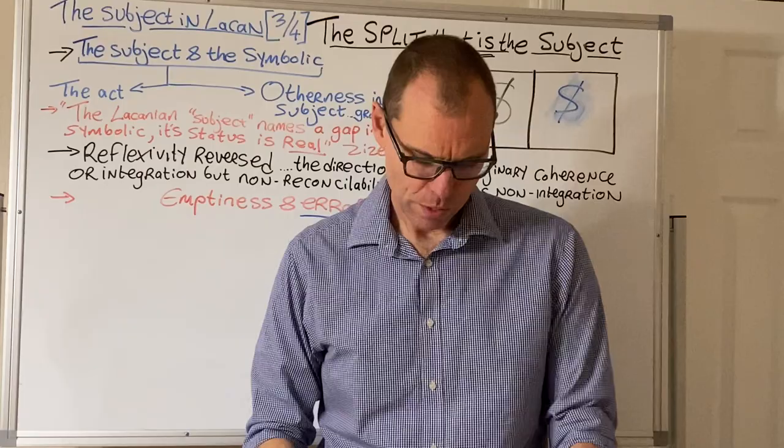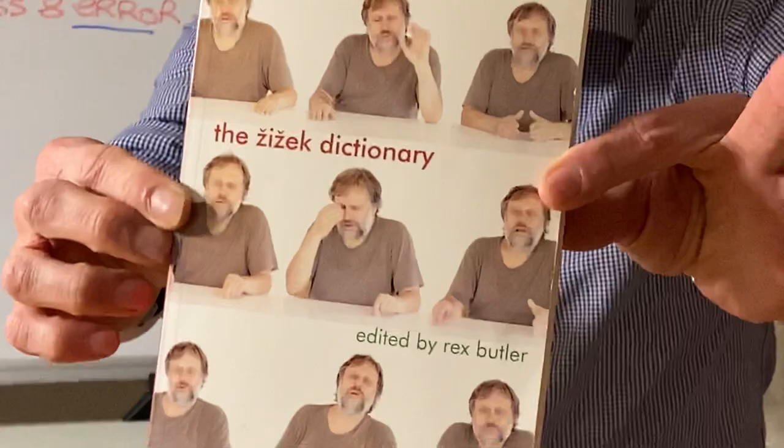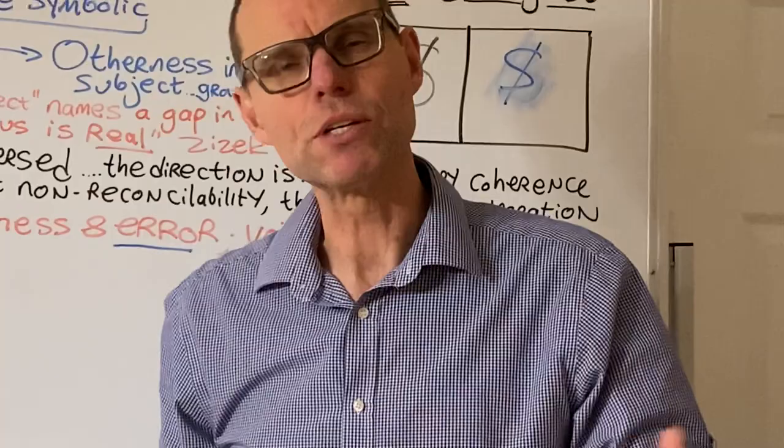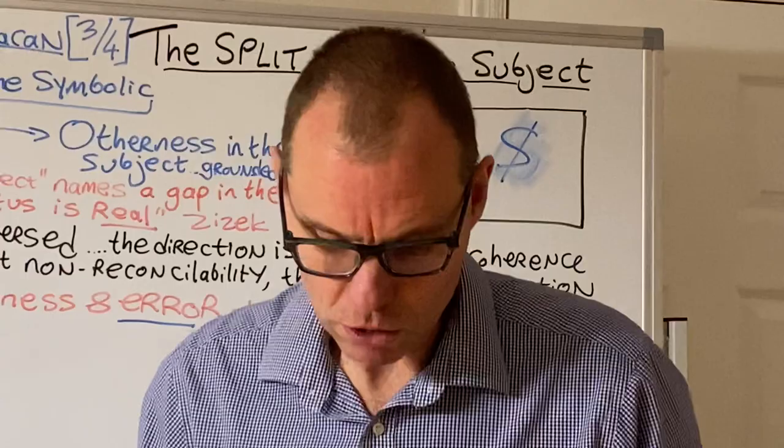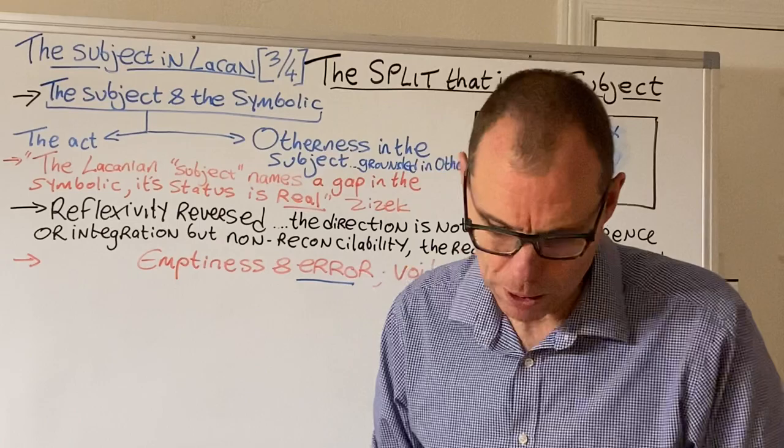You'll remember that earlier I spoke about the subject as a kind of truth event, the subject as an event, as a kind of occurrence that happens in language. So let's say a little bit about the act — what is the act in Lacan? One way of doing that is to look at the Žižek dictionary, edited by Rex Butler. He's going to give us an account which brings to the forefront the role of structure in how we think the subject — how the subject emerges within structure, although without being fundamentally reducible to structure.